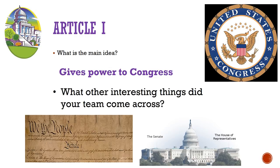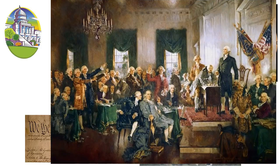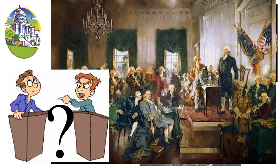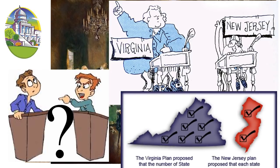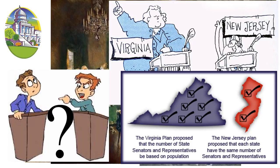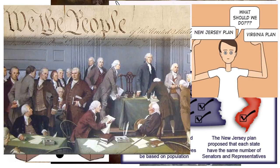Article 1 gives power to Congress, the legislative branch, which makes the laws. During the Constitutional Convention in 1787, there was a lot of controversy surrounding how many representatives each state should have in Congress. States with large populations like Virginia wanted more power than states with smaller populations like New Jersey. They named these plans after those states, and representatives at the convention got behind one or the other depending on their state's population. This created a big problem because about half wanted the New Jersey plan and the other half wanted the Virginia plan.